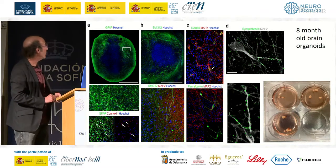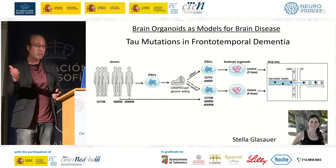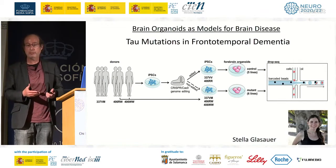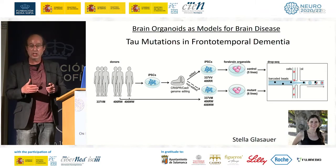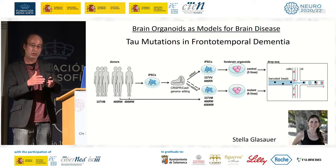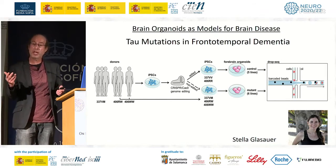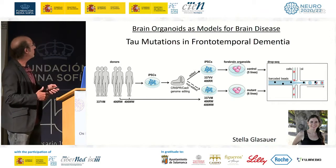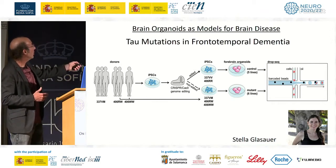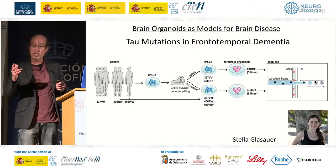Because you can make organoids from any of us by taking a small skin biopsy and reprogramming the cells, we've reprogrammed them to stem cells and differentiated them to neurons making organoids. We've done that with several individuals who carried tau mutations. Those particular mutations are shown right here — P301L (337M) and R406W — made here in the dish.